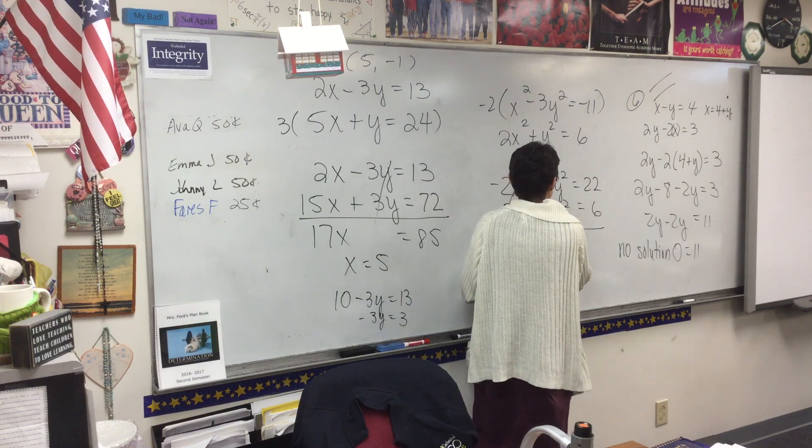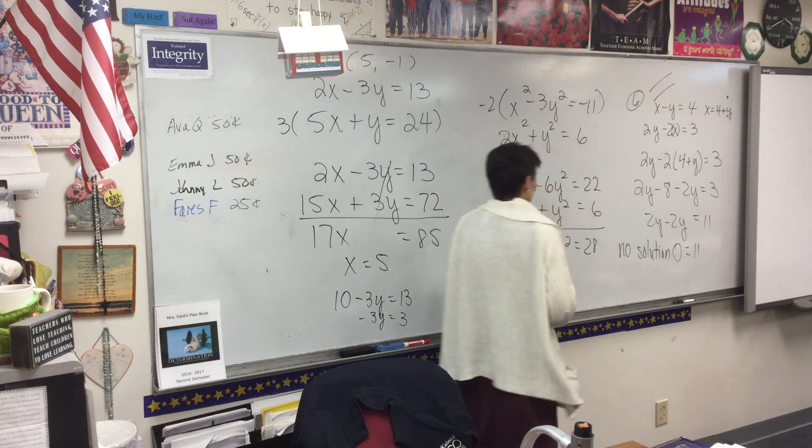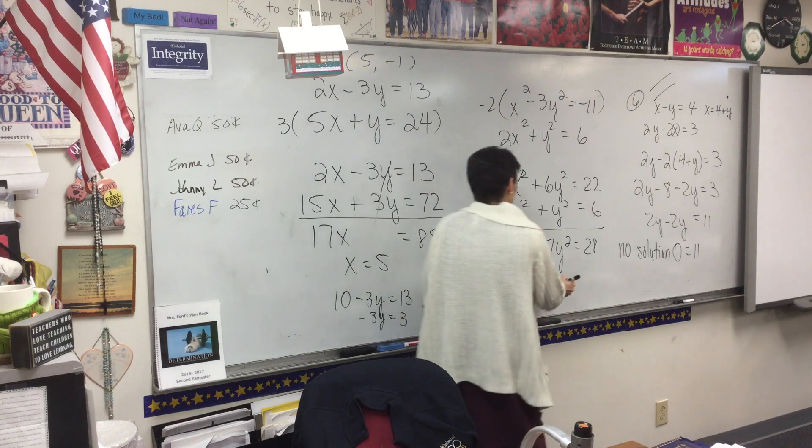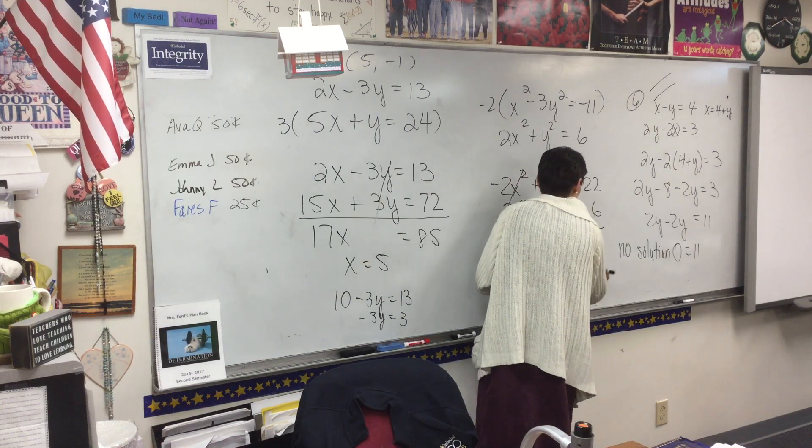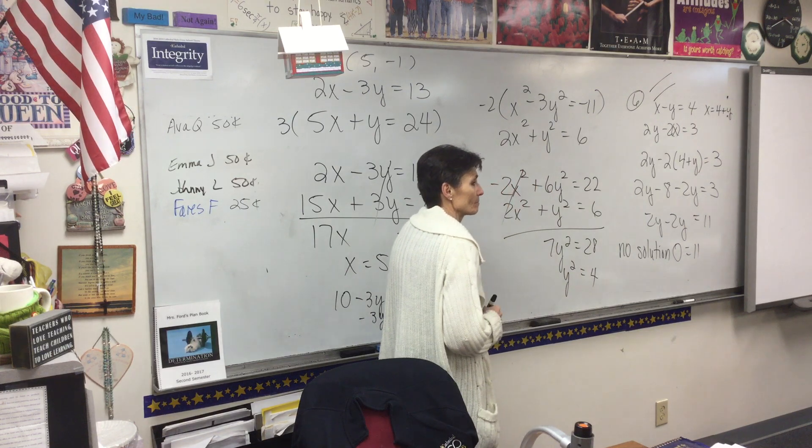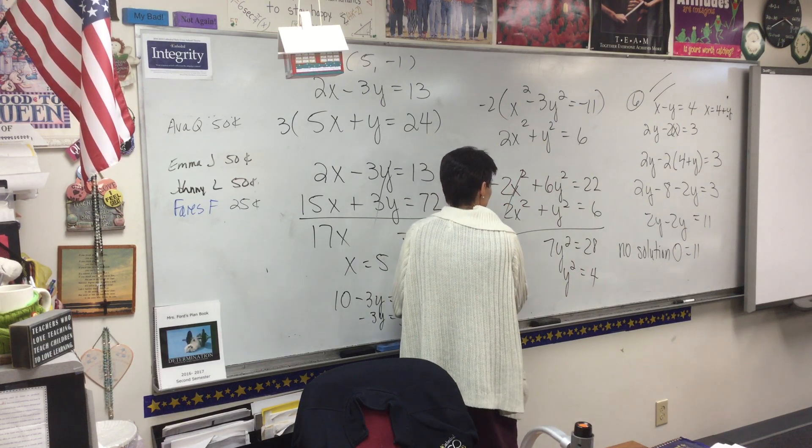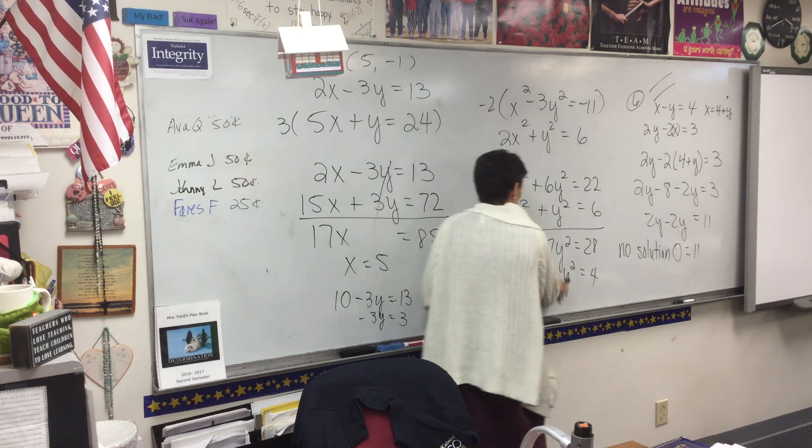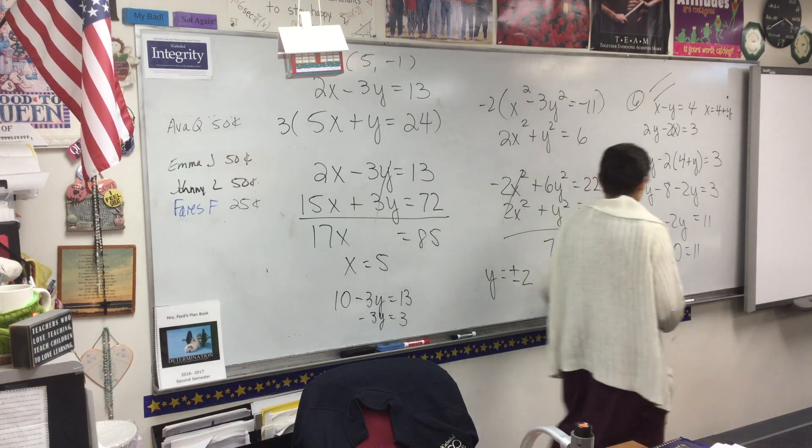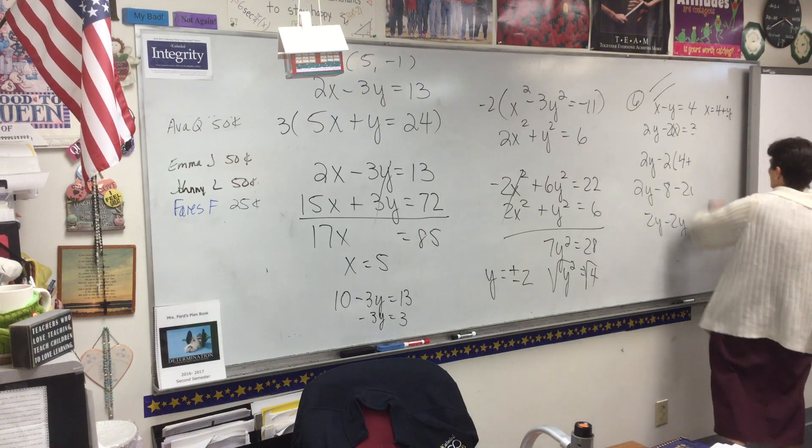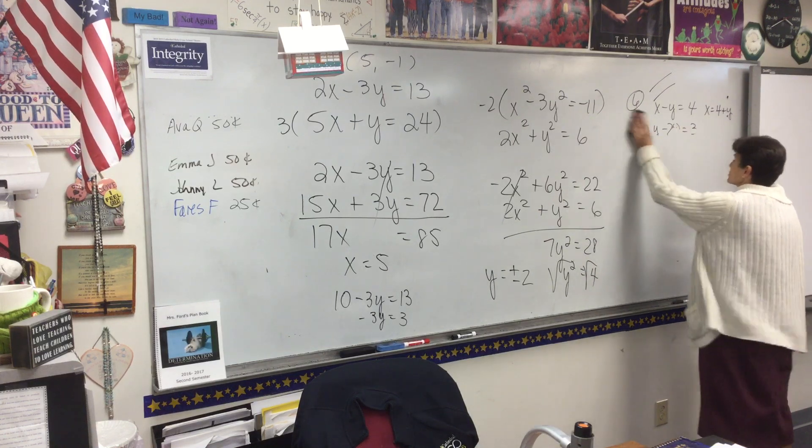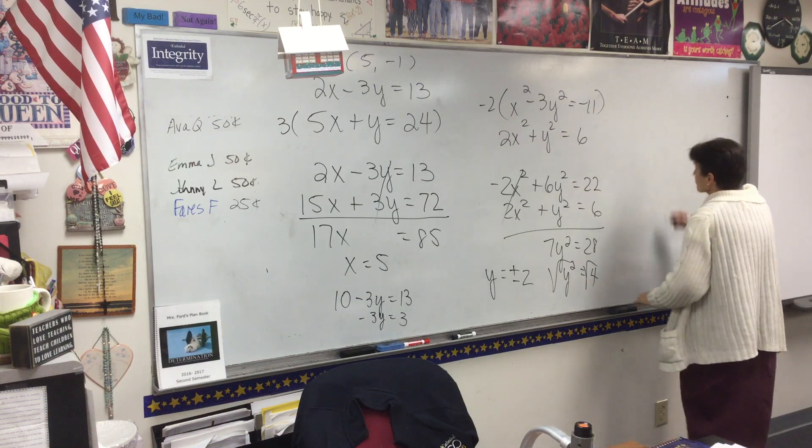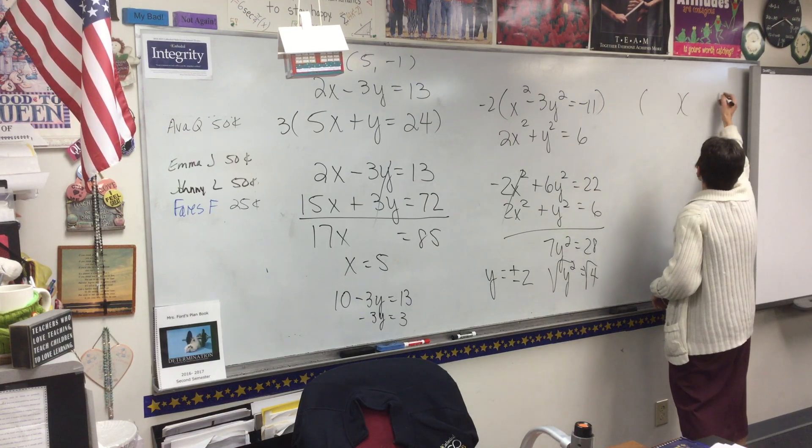7y squared equals 28. y squared equals 4. And y equals plus or minus 2. When you take the square root of both sides, you've got to do the plus or minus, right?